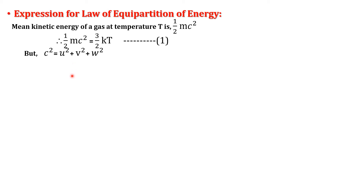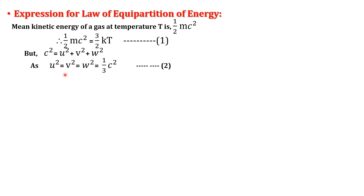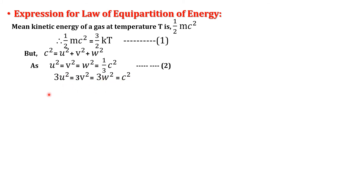Since x, y, z are equivalent, the mean square velocity along the x, y, z axes must be equal. Therefore, u² = v² = w². Since u, v, w are equal, C² = u² + v² + w², and each component must be equal to one-third of C². Hence u² = v² = w² = C²/3.